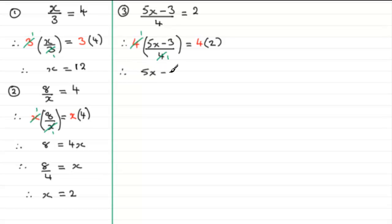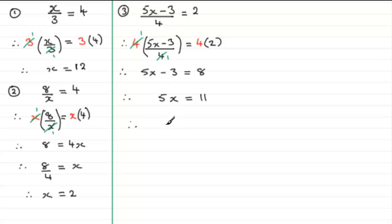So we have 5x minus 3 equals 8. Adding 3 to both sides gives 5x equals 11. Dividing both sides by 5 gives x equals 11/5, which as a mixed fraction is x equals two and one fifth.